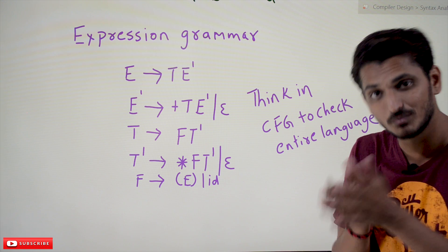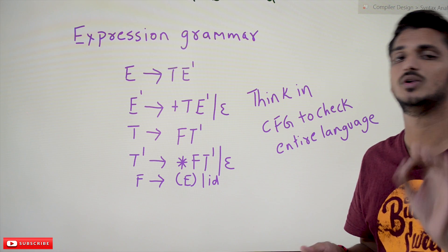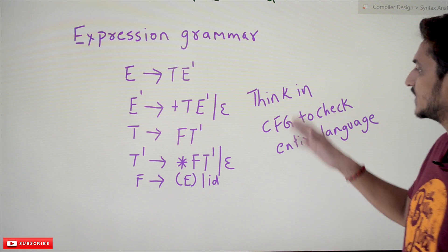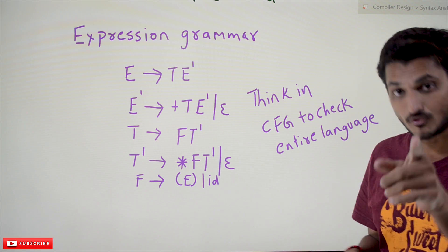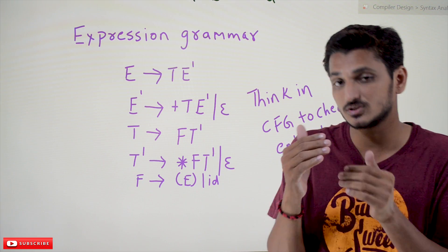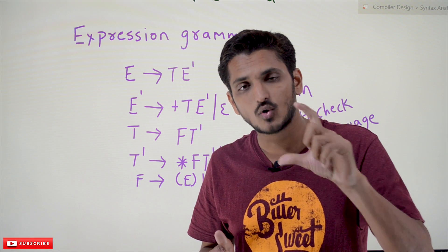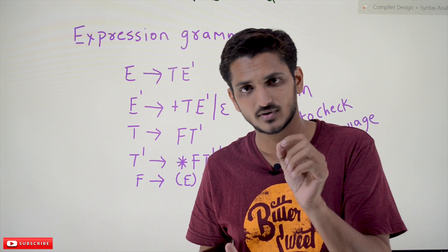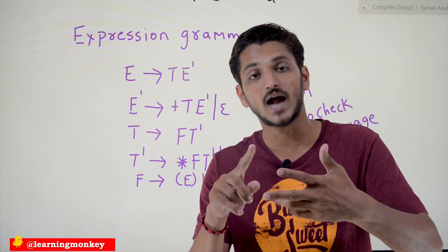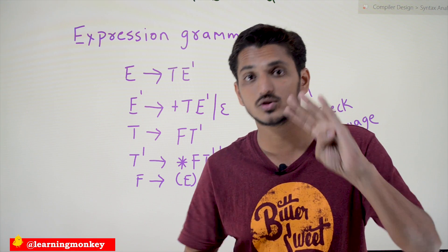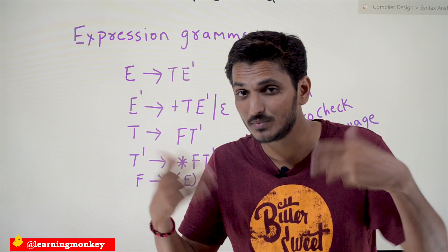But is recursive descent parsing a good approach for our context-free grammars? No, it is not, because of backtracking. Think about the big picture — we showed an example context-free grammar to identify Pascal syntax: if statements, loop statements, expressions, and other statements. How many non-terminals would there be for a full language?